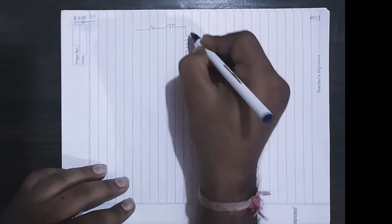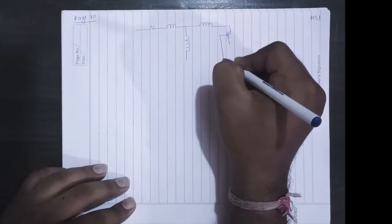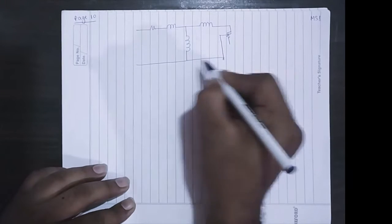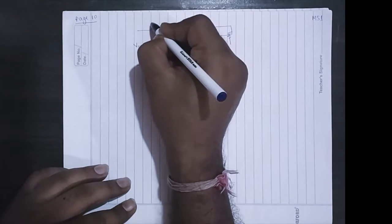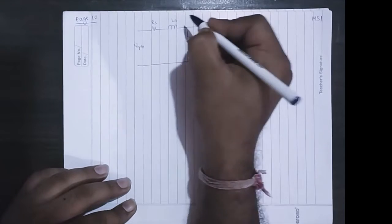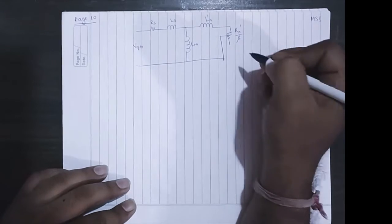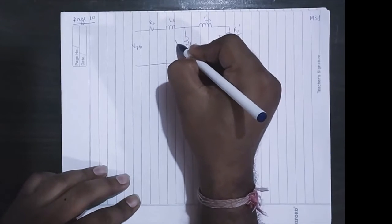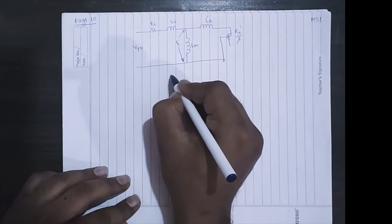Now let us consider the per phase diagram of an induction machine. Let the voltage be V_phase. This is R_s, this is L_s, this is L_m, L_r, and this is R_r dash by s, where s is the slip. This is E.